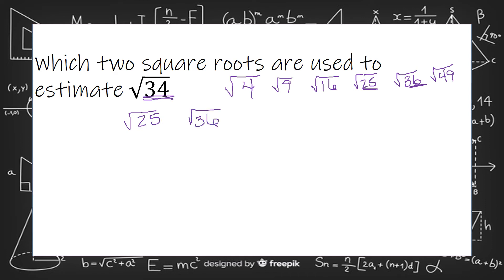So the two square roots are square root of 25 and square root of 36. The square root of 25 is what times itself gives me 25. That's 5. And the square root of 36 is 6. So the two square roots are either square root of 25 and square root of 36 or 5 and 6.